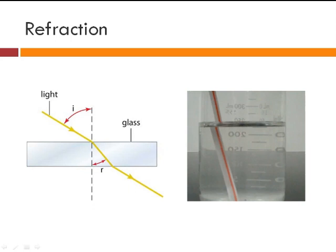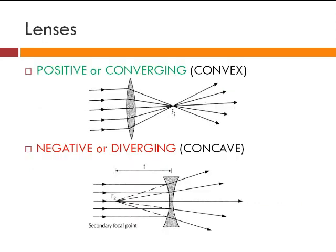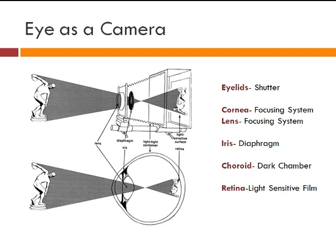It bends towards the normal, and if you see in this picture, the straw looks broken. This is a phenomenon which works in the eye. There are two types of lenses: one is a converging lens, also known as a convex lens — positive in the sense that it magnifies the image. And then there is another lens which is a concave lens, also known as a diverging lens, and it is a negative lens.